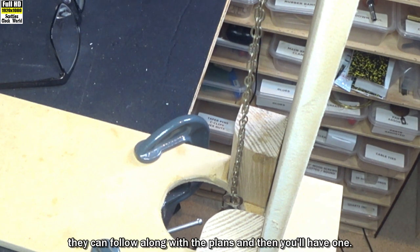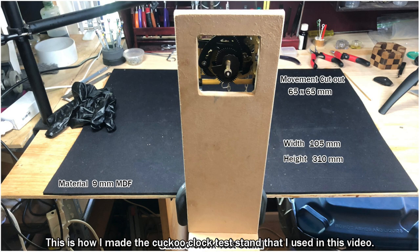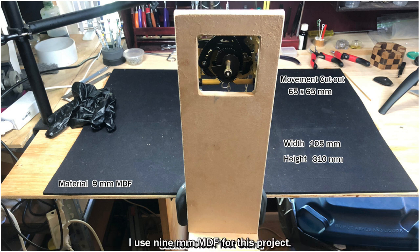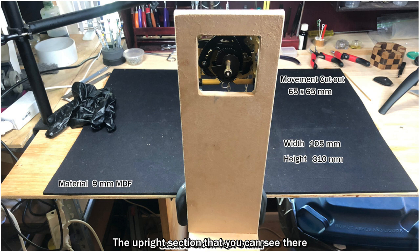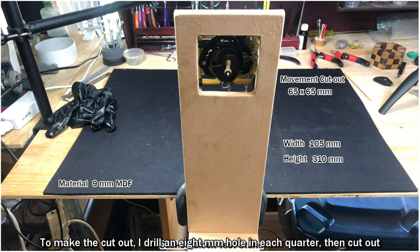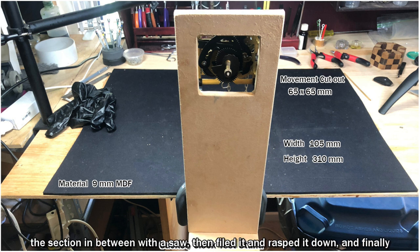This is how I made the cuckoo clock test stand that I used in this video. I use 9mm MDF for this project. The upright section that you can see there has a width of 105 millimeters and a height of 310 millimeters. The cutout section where the movement is installed is 65 by 65 millimeters. To make the cutout, I drill an 8mm hole in each corner, then cut out the section in between with a saw, then filed it and rasped it down, and finally finished it off with sandpaper.